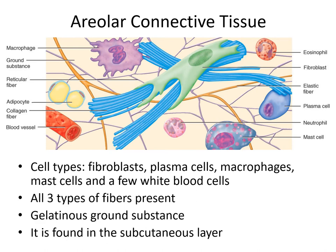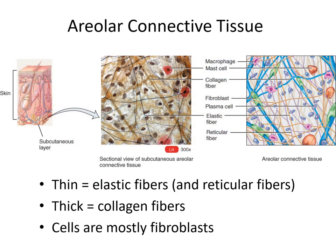Adipocytes mixed in store fat. Macrophages wander around cleaning up debris and can also digest and destroy foreign cells. One of the areas where you'd find this is in the subcutaneous layer — stretchy white material called fascia that connects the skin to the underlying muscle. It's very elastic because of the elastic fibers it contains, so the skin can move around as the muscles move underneath it. Hopefully by this point you've all had a chance to see areolar connective tissue under the microscope.